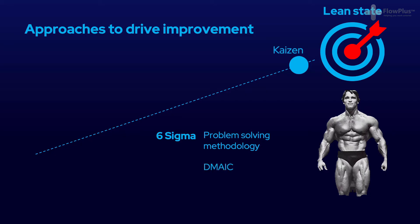Six Sigma follows a structured approach known as DMAIC, which I'll explain in the next module. An important note is that this lean state we're striving towards is never-ending and impossible to reach. Companies like Toyota are regarded as being among the closest to this destination, but every company is on a separate journey on a sliding scale. As long as they're moving closer towards it, they're going in the right direction.